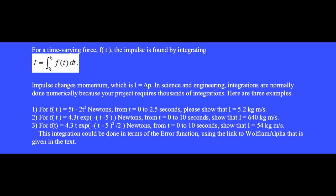For a time varying force, F of t, the impulse is found by integrating across the time interval from t1 to t2. Impulse changes momentum, which is I equals delta p.